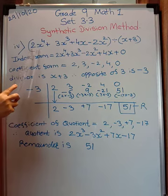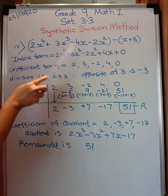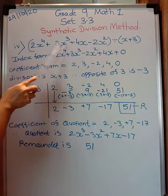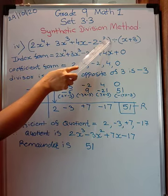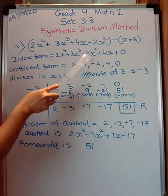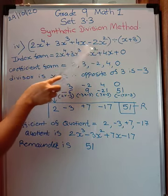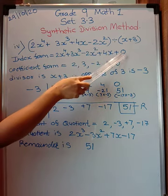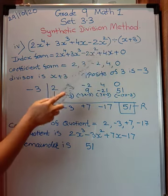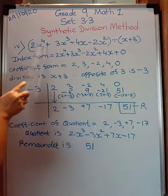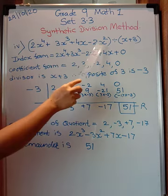In index form, 2x raised to 4 will come first, then 3x cubed. After x raised to 3, x raised to 2 should come, so minus 2x squared should come, then plus 4x, and then plus 0. The 0 is for the constant term which is missing. This is the standard form.